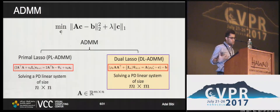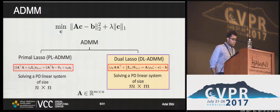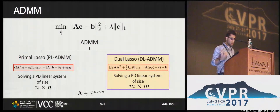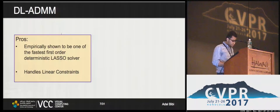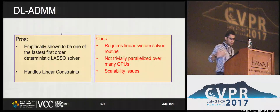Looking at the lasso problem, I would like to apply ADMM directly to it. There are two ways: we either apply ADMM to the primal lasso or to the dual version of the lasso, denoted PL-ADMM and DL-ADMM respectively. The bottleneck is solving a linear system — in primal lasso of size n×n, and in the dual lasso of size m×m. Given that matrix A is often fat with more columns than rows, it's more attractive to go for the dual lasso. This has been shown empirically to be one of the best deterministic first-order solvers, and it naturally handles linear constraints.